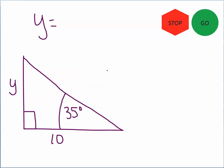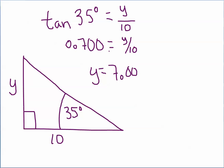All right, we're looking for the value of y. Click on the stop sign and see how you're doing. We have 35 degrees. We're looking for the opposite side and we know the adjacent side, so that's the tangent function. Tangent of 35 degrees is 0.700, correct to three decimal places, equal to the opposite side y divided by 10. Multiplying both sides by 10, y equals 7.00. The trailing zeros indicate accuracy to a couple of decimal places.